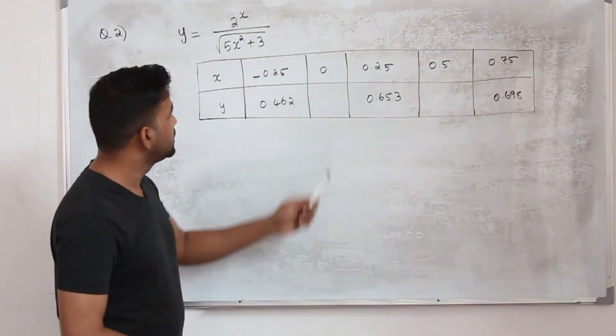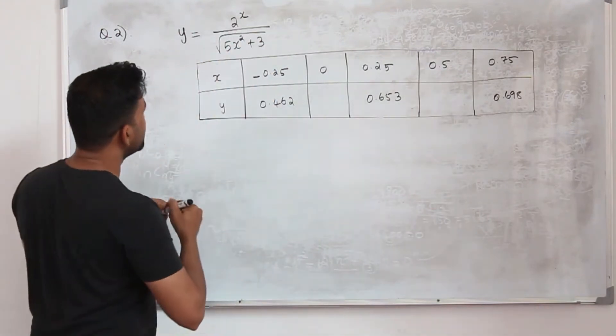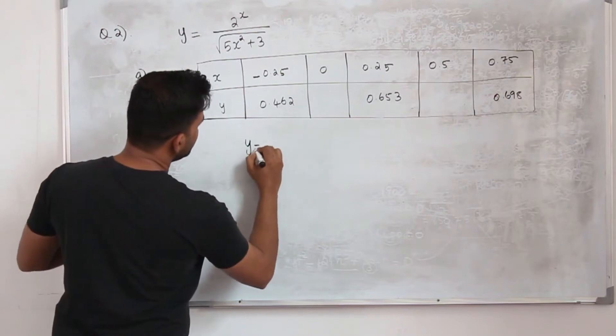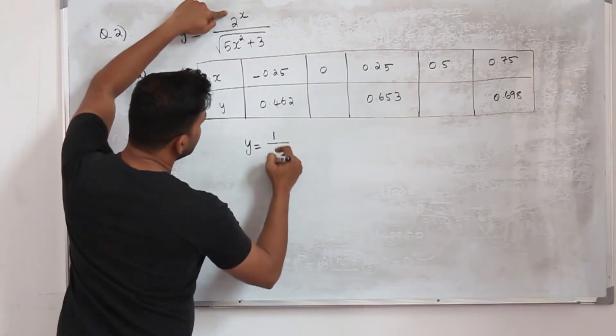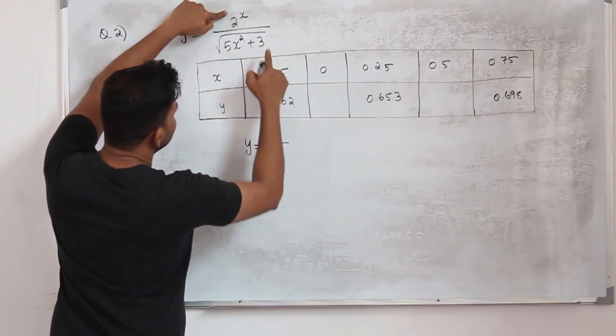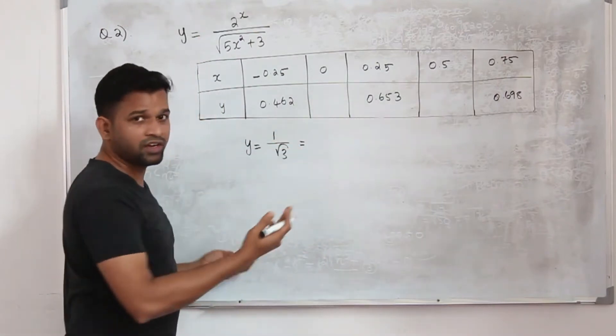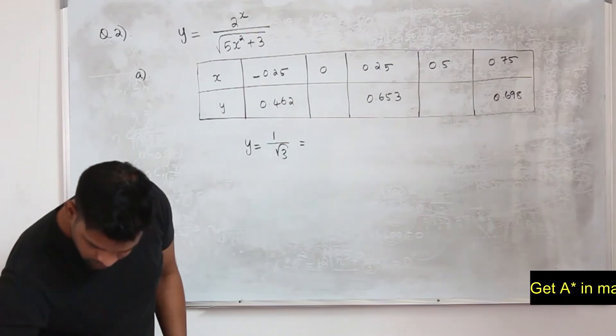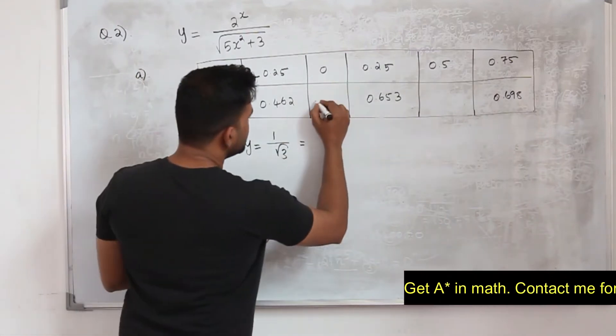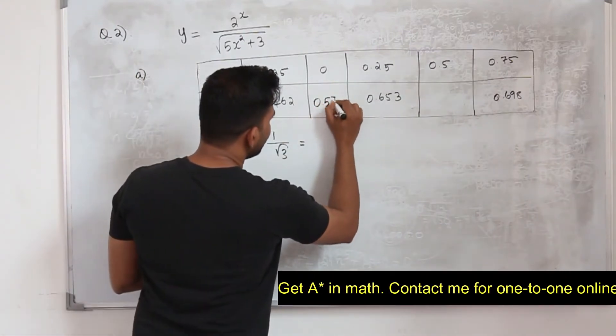This question got only one mark. So substitute 0 here, replace x by 0. Your y is 2 to the power 0 is 1, and 5 times 0, 0 plus 3 is square root of 3. Change it to decimal number, write it in 3 decimal places, which is 0.577.